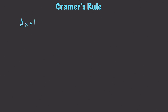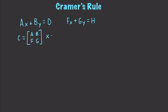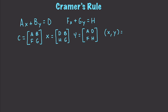Up next, I want to talk about Cramer's Rule, which provides a way of solving systems of equations. If you have one equation of this form equal to D and another one equal to H, what we're going to do is create a matrix C from the coefficients A, B, F, and G. We create another matrix with D, B, H, and G, and another one with A, D, F, and H. We will then be able to find the values for X and Y by finding the determinant of the X matrix over the determinant of C, and Y by finding the determinant of the Y matrix divided by the determinant of C.